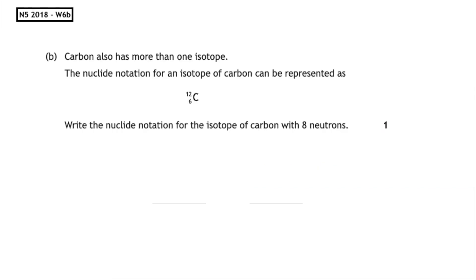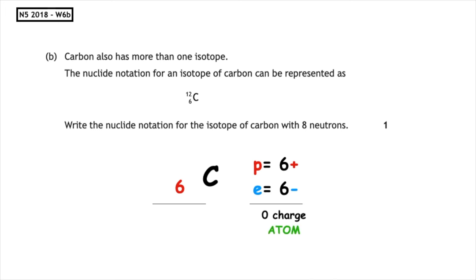Part 6b says: carbon also has more than one isotope. Write the nuclide notation for the isotope of carbon with eight neutrons. We need to find the protons, electrons, and neutrons. The chemical symbol for carbon is C, and its atomic number remains six, so it has six protons. Because we're looking at an atom, the overall charge is zero, so it has six electrons. We have eight neutrons as given, and six plus eight gives us a mass number of 14.